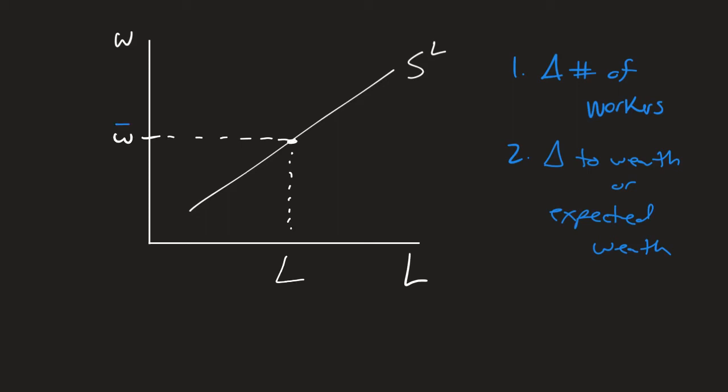So when we're talking about shifts, we want to shift to the right would be an increase, or to the left would be a decrease. So we're holding the real wage fixed, and we're seeing more people enter the labor market, or people leave the labor market. That's how we're going to be looking at the supply of labor and the two shifts that we're going to be talking about.